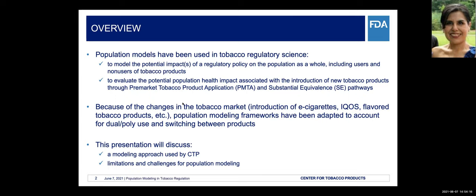The second aspect is to evaluate the potential population health impact associated with the introduction of new tobacco products through two different pathways: the first is through pre-market tobacco product application (PMTA), and also for modified risk tobacco product application and substantial equivalents — SE pathways that are clearly stated in the FDA CTP webpage.